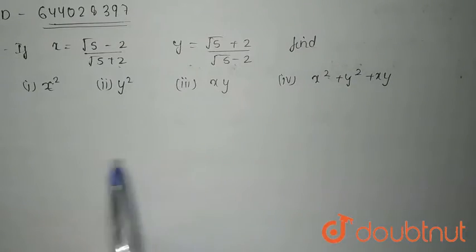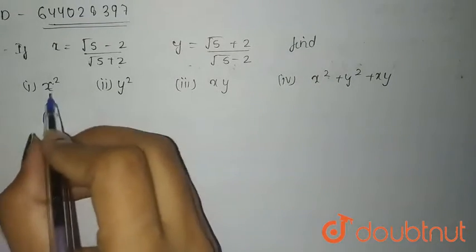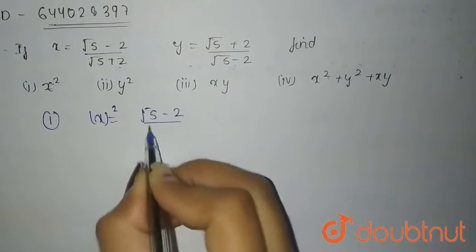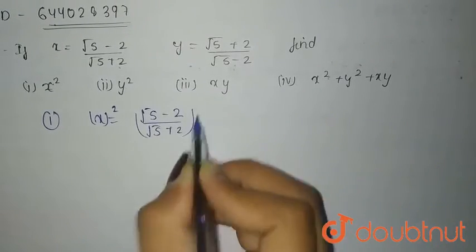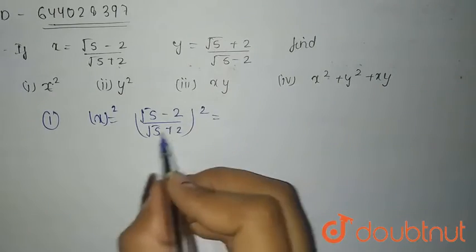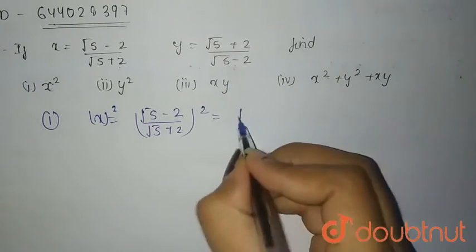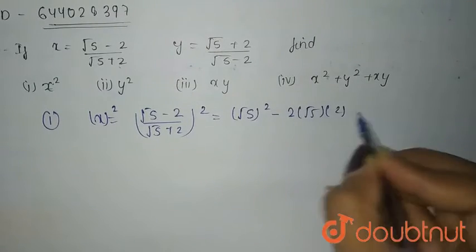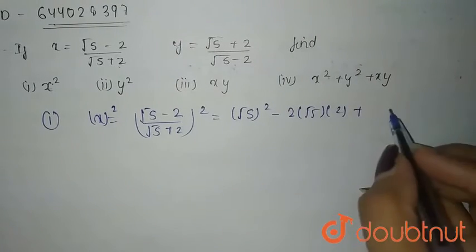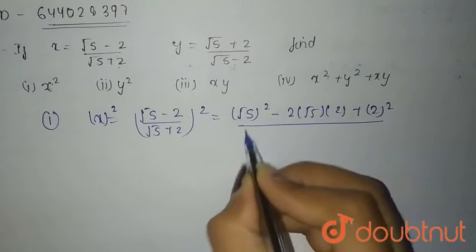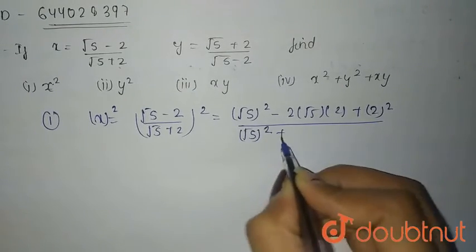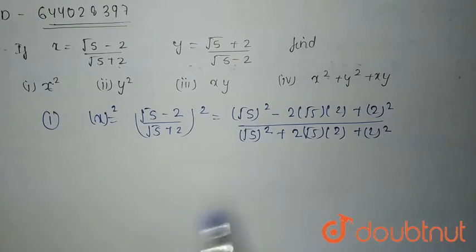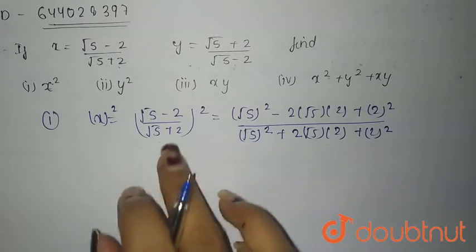So we need to find out these values. First of all, we need to find x squared. x squared equals (√5 minus 2) upon (√5 plus 2), the whole square. This is of the form (a minus b) whole square upon (a plus b) whole square. So, a squared is (√5)² minus 2ab, that is 2·√5·2, plus b squared, that is 2², upon (√5)² plus 2·√5·2 plus 2². This is by the identity of (a minus b)² and (a plus b)².